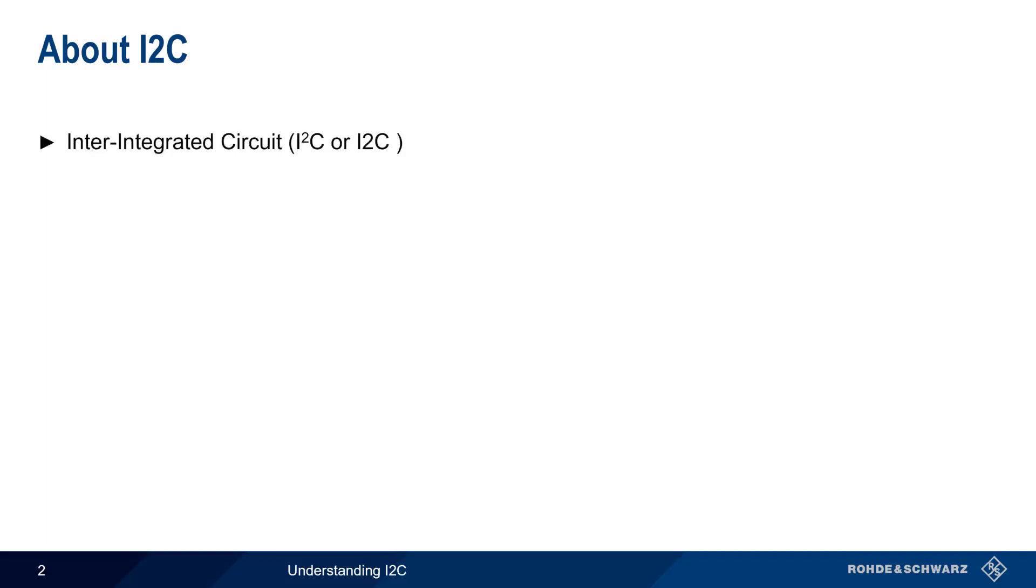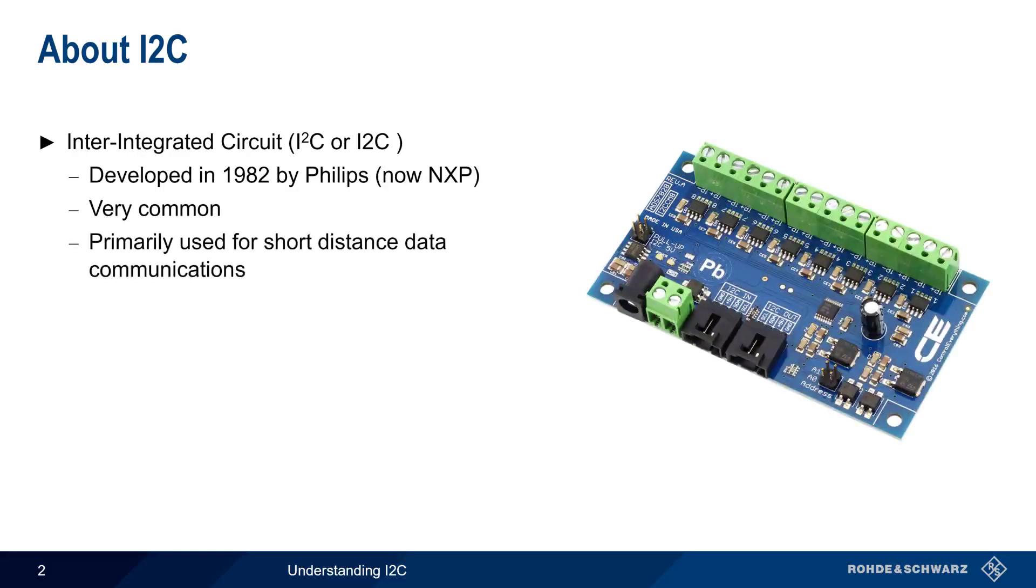The Inter-Integrated Circuit Protocol, commonly called either I2C or I-squared-C, was developed in 1982 by Philips. It's one of the most common serial protocols and, as the name implies, it's used primarily for short-distance data communications.